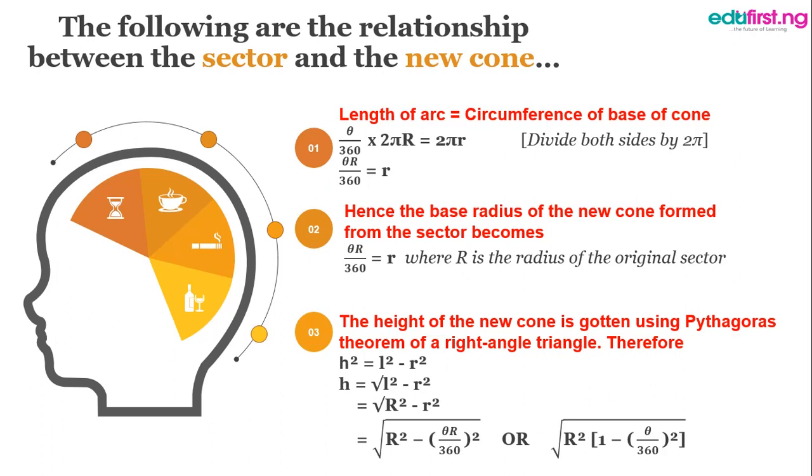Hence, the base radius of the new cone formed from the sector becomes theta R over 360, where capital R is the radius of the original sector.